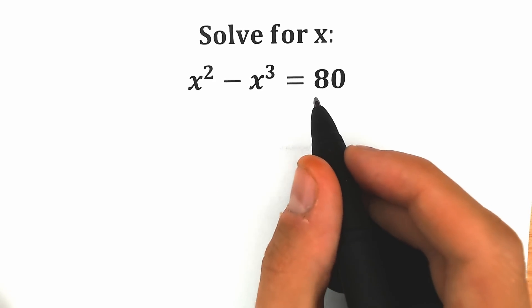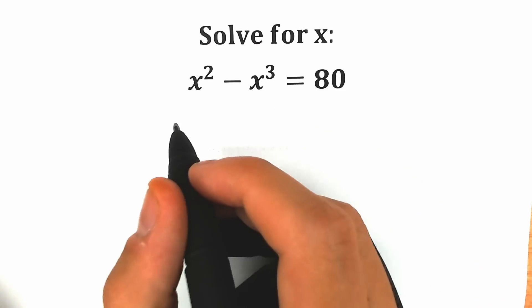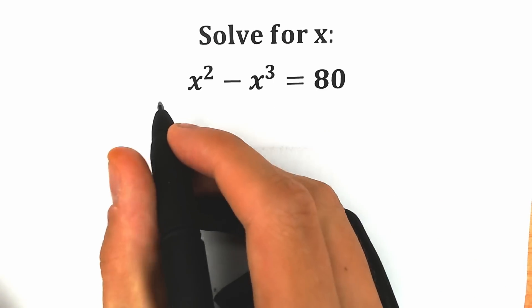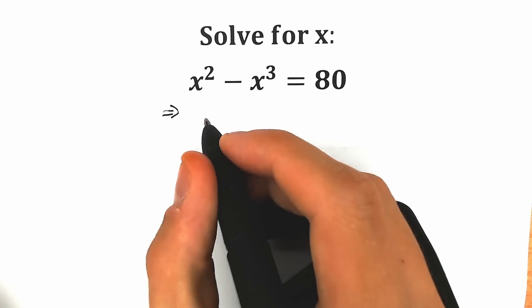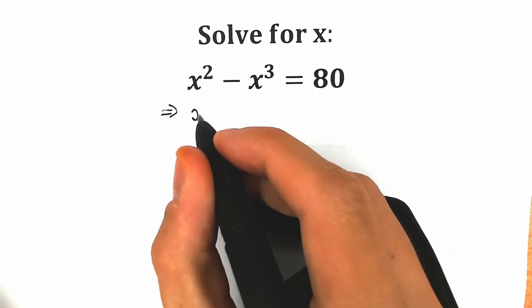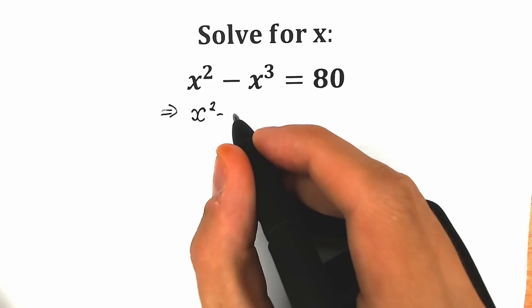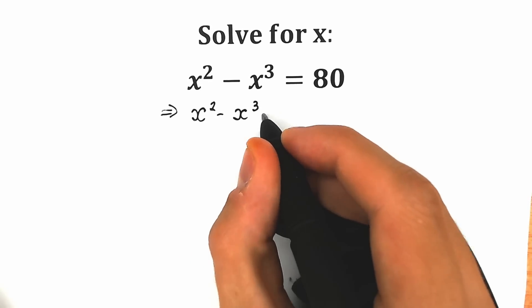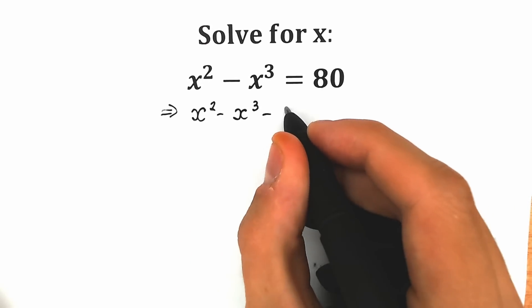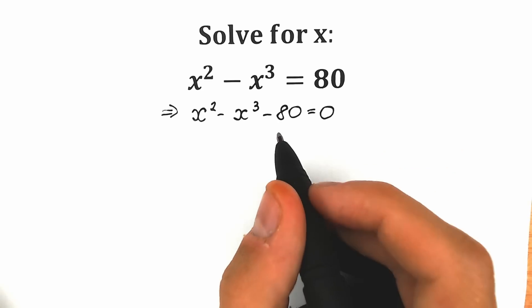First of all, let's bring this 80 from the right side to the left side. As a result, we have x squared minus x cubed minus 80 equal to zero.